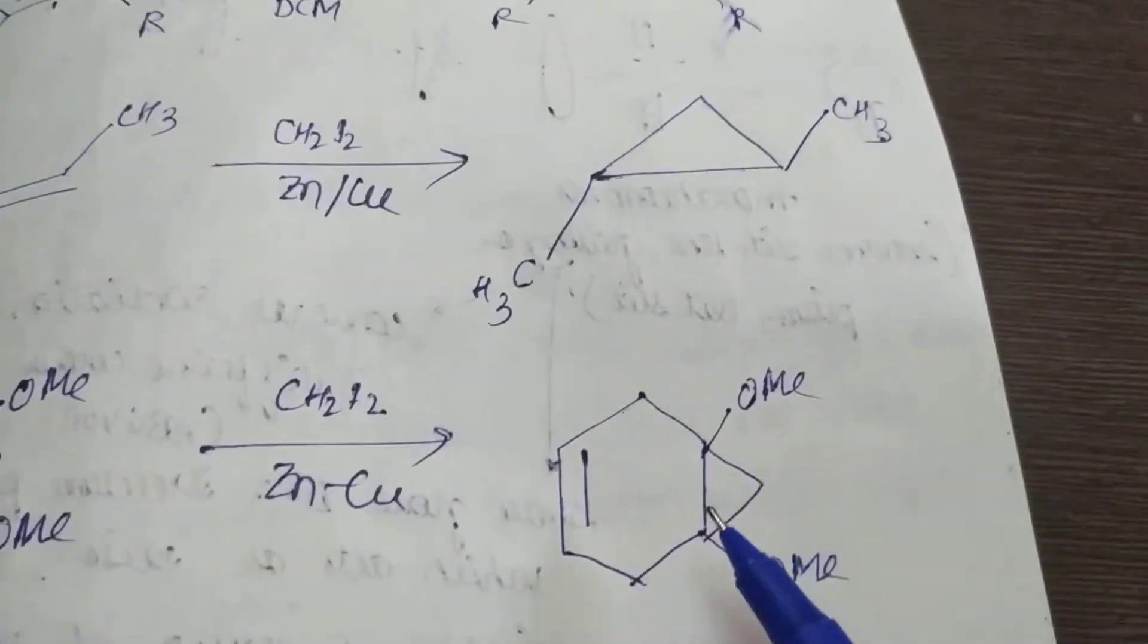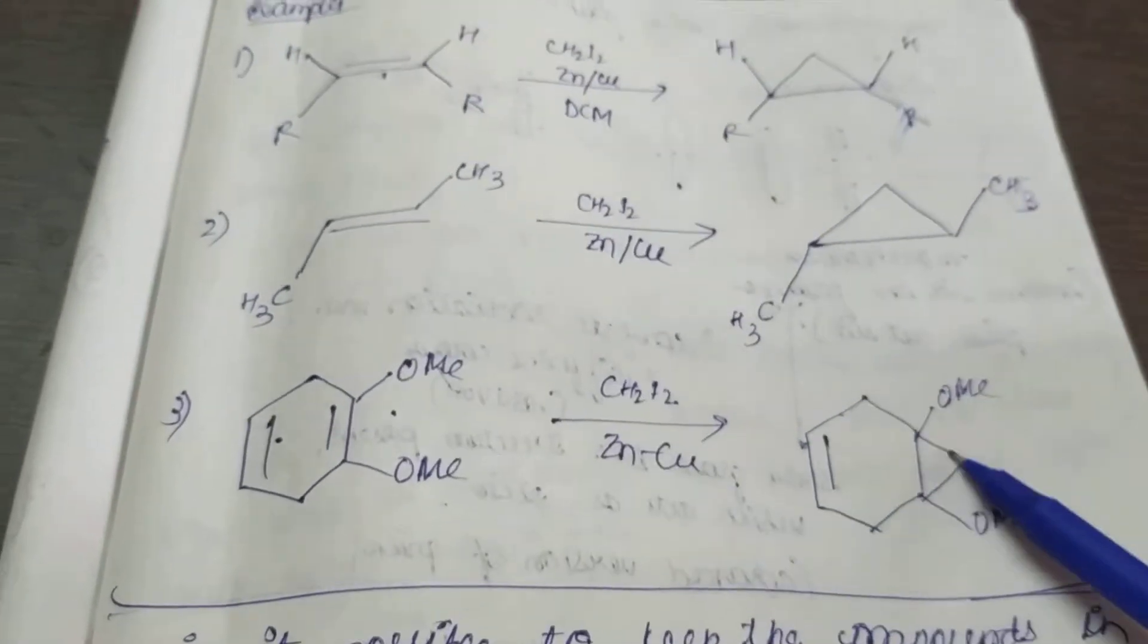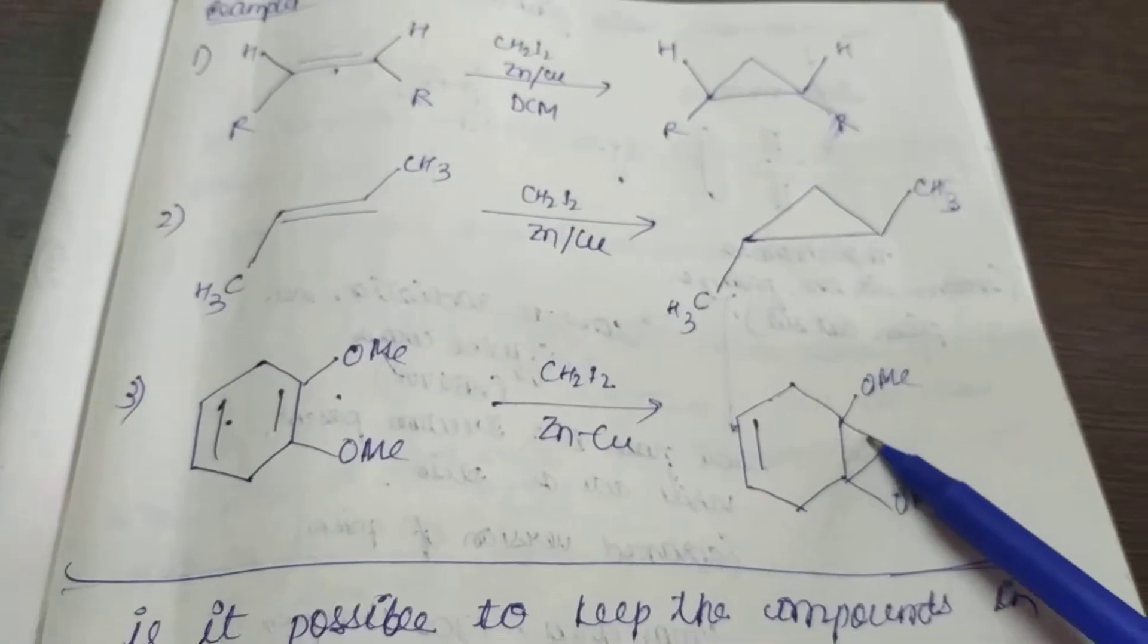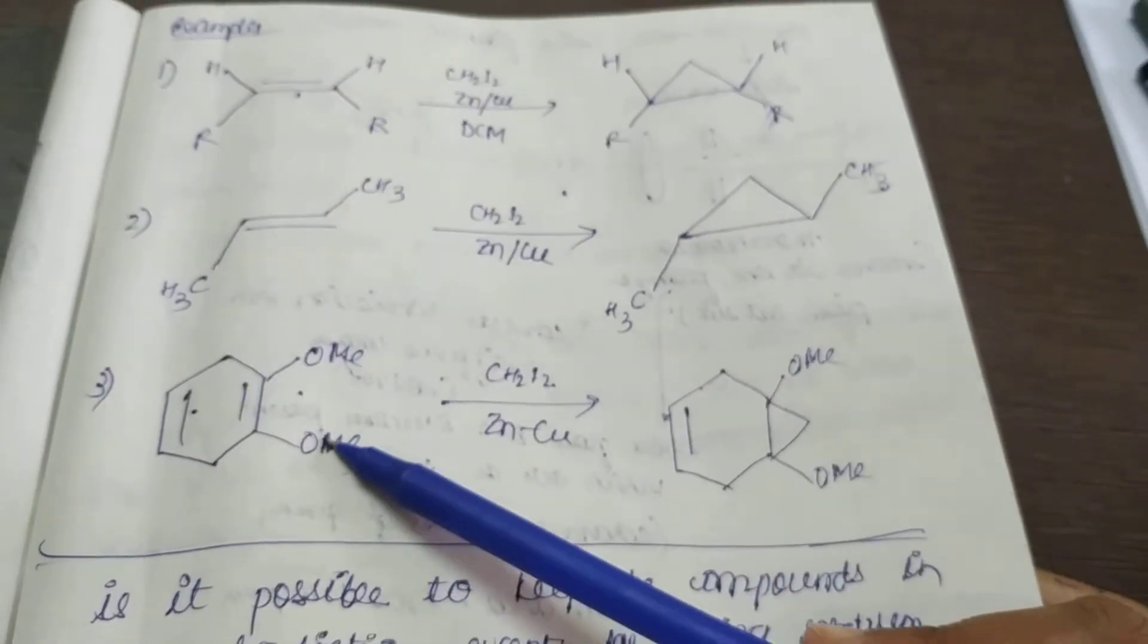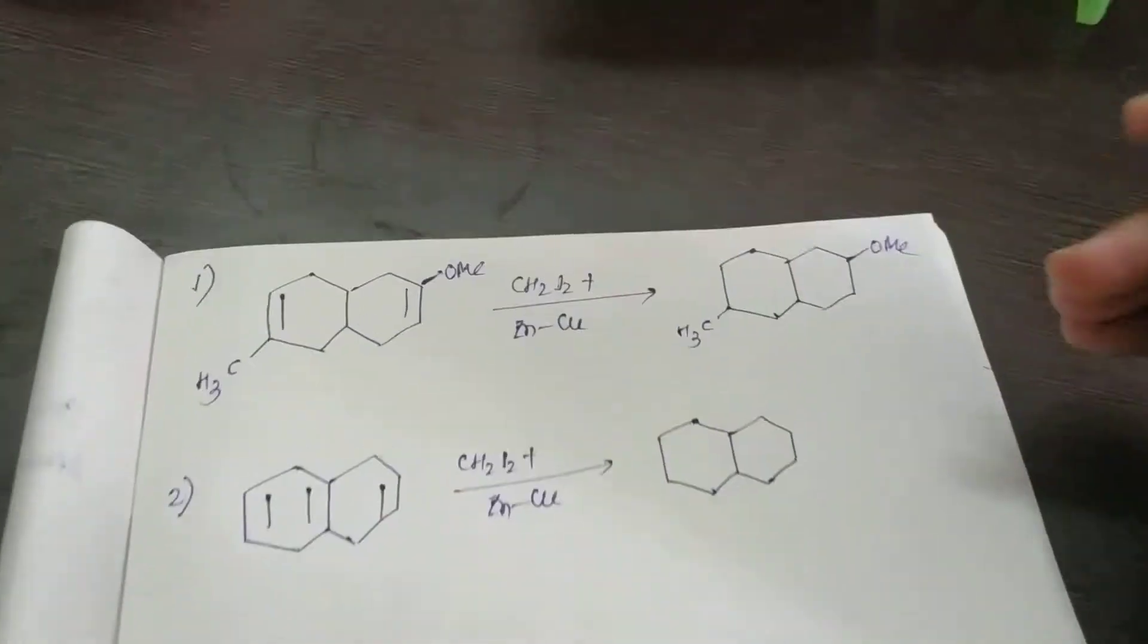in this example you can see why the cyclopropanation has formed in this place - because here the electron density is more due to this group present. Okay, so now let's look quickly into these examples.